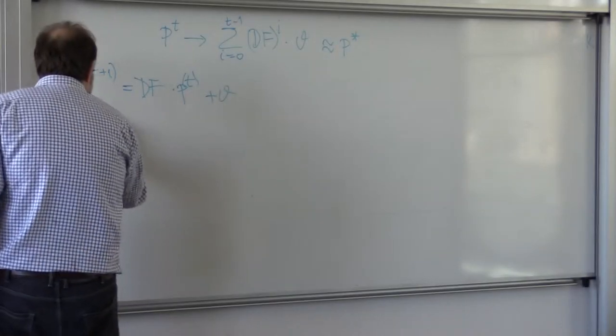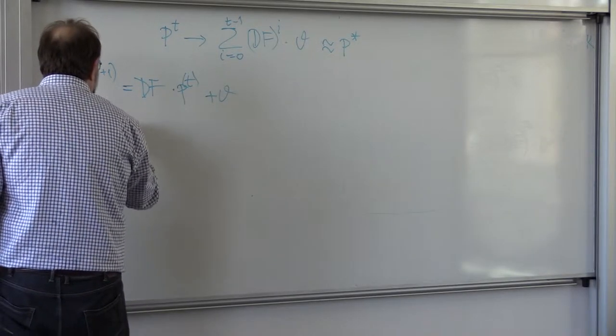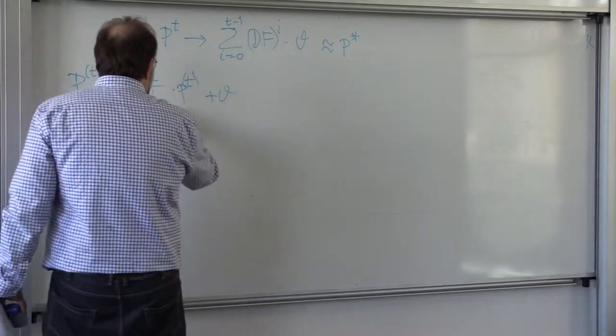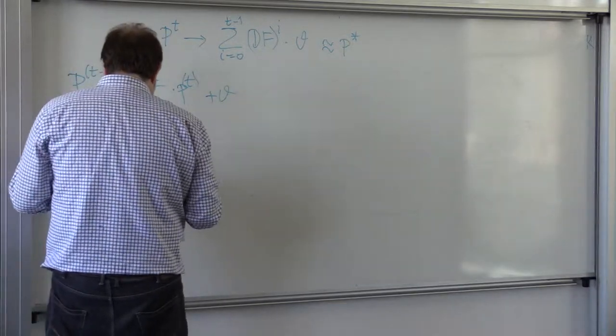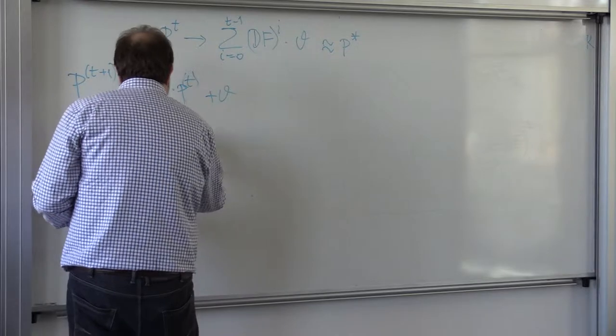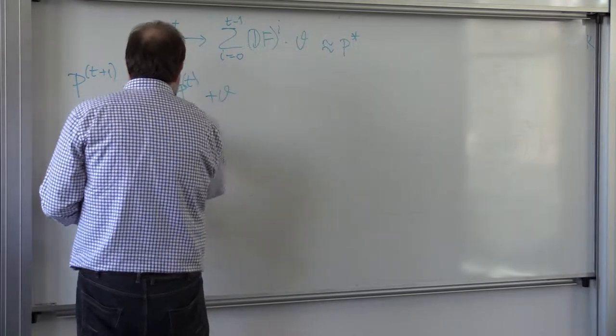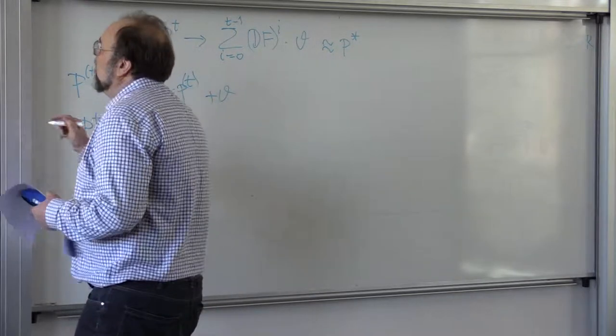But if you multiply, look what you get. PT plus 1 is equal to, what is DF times PT? Well, that's gamma I, right, when you multiply.